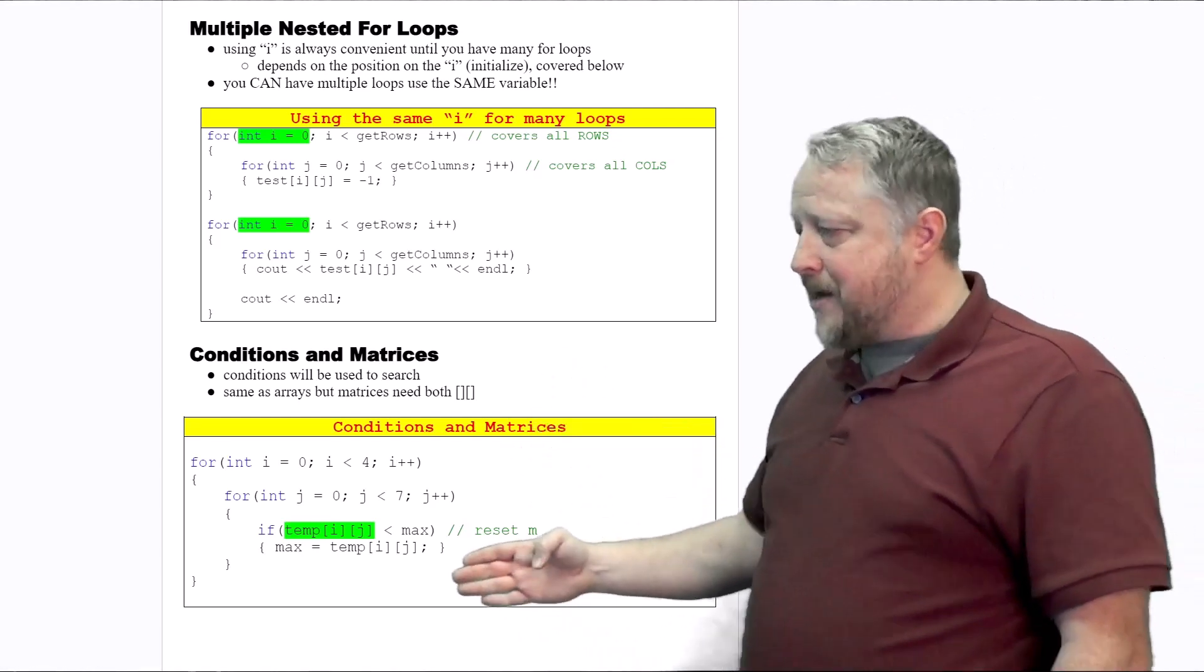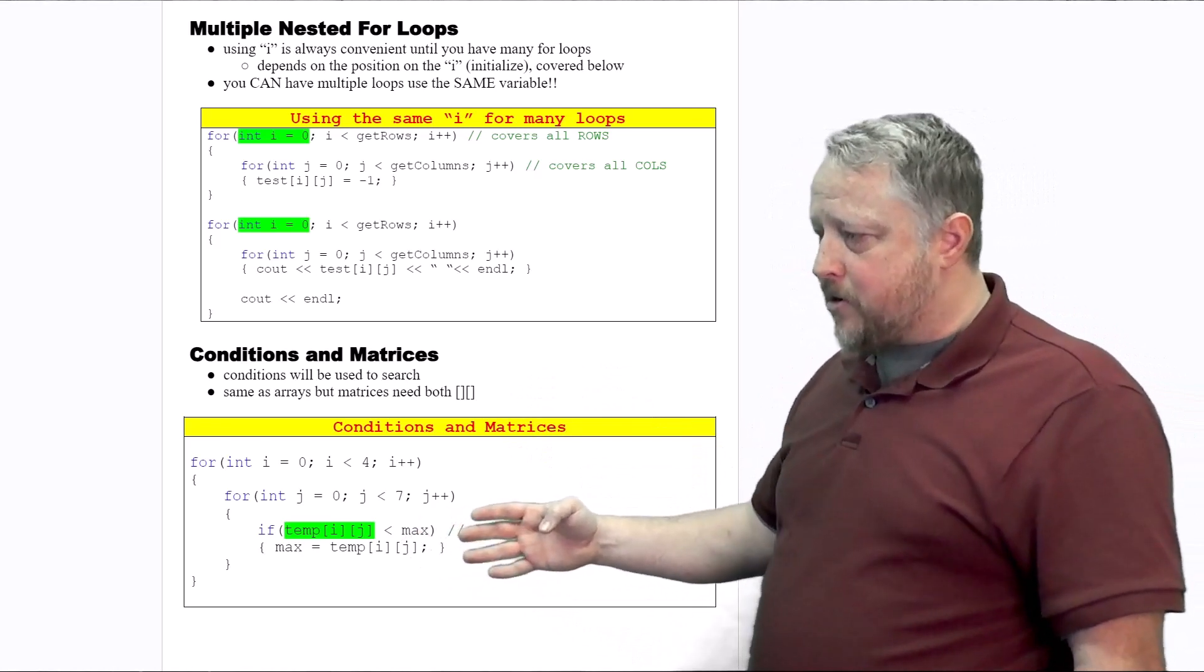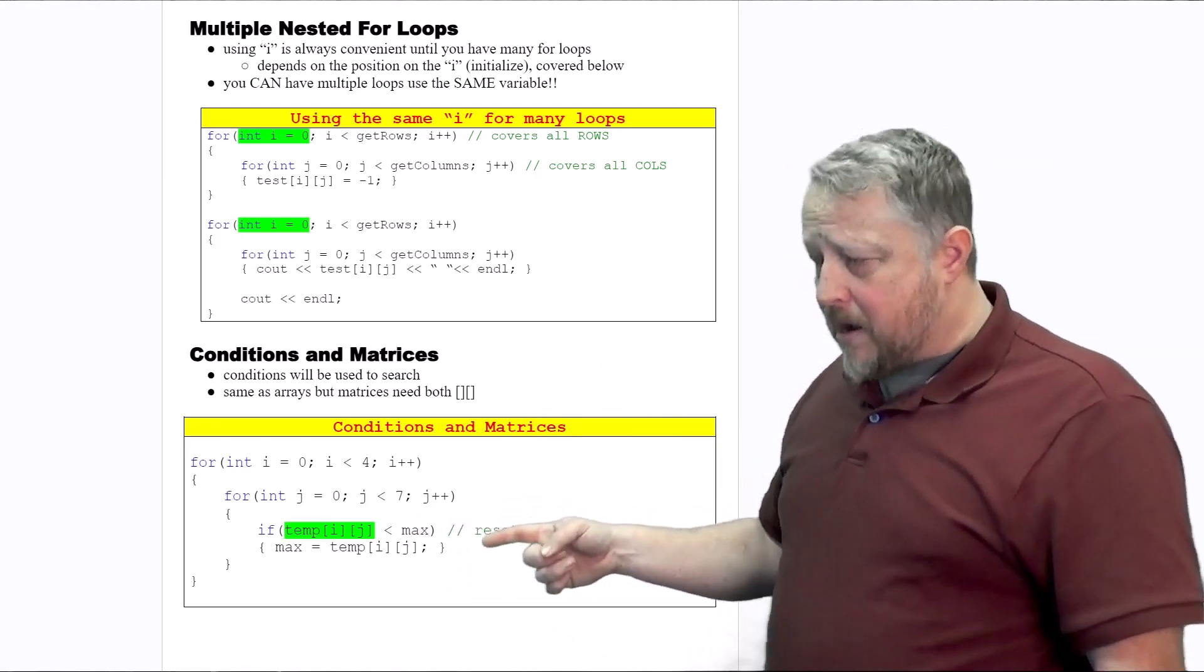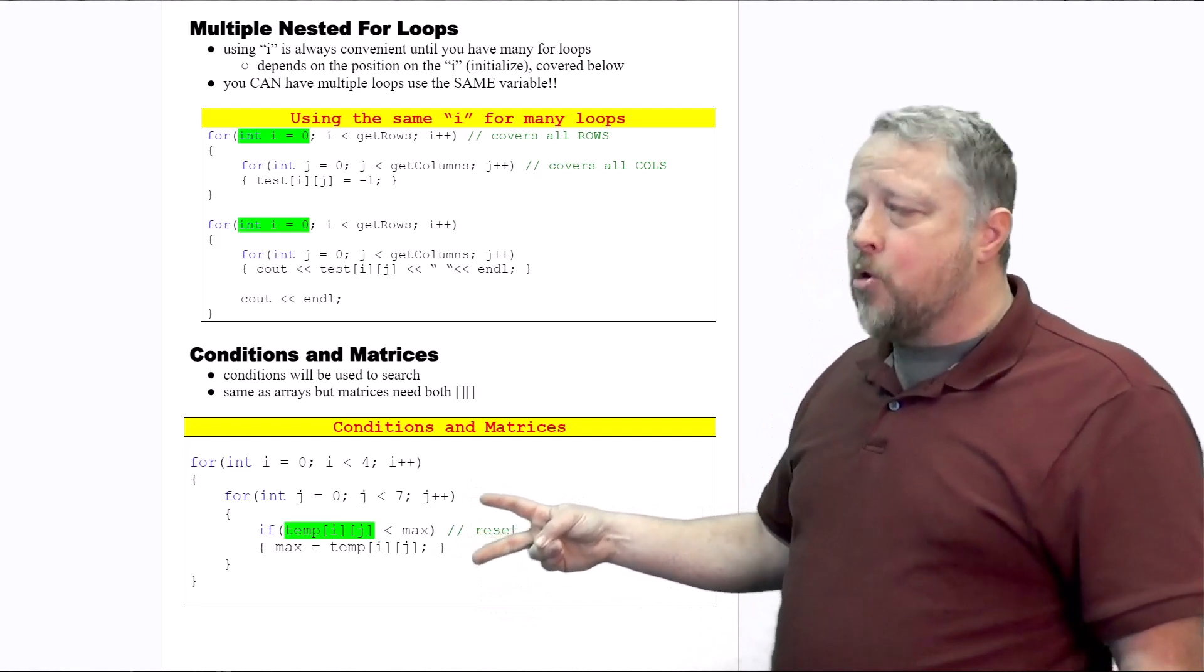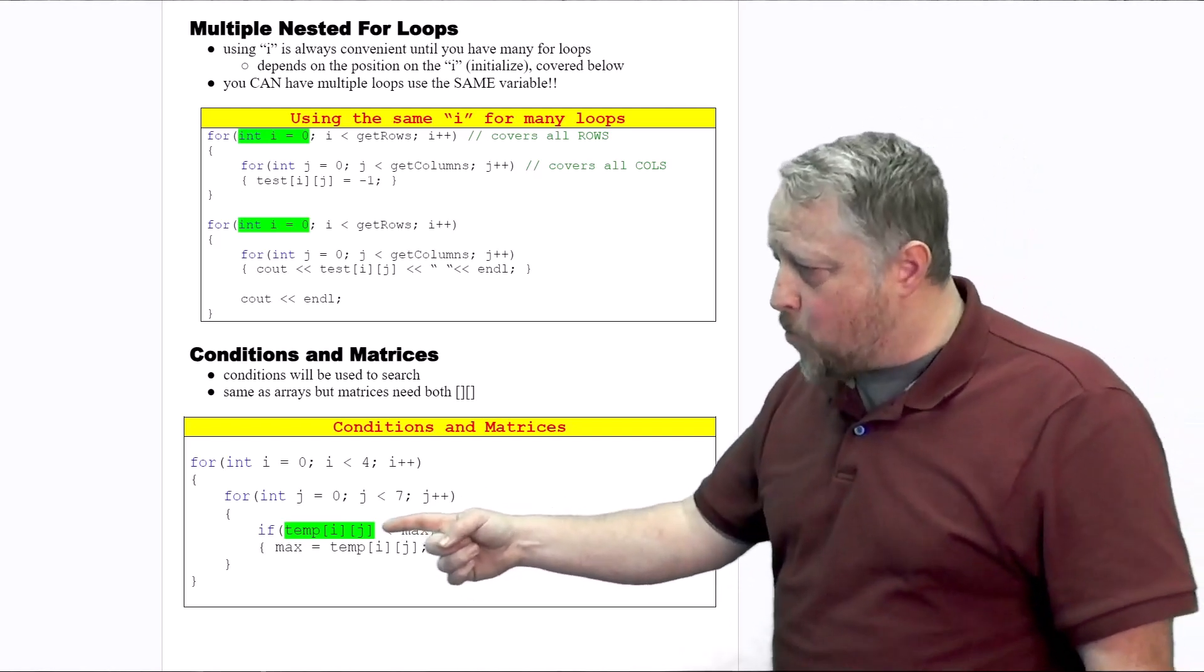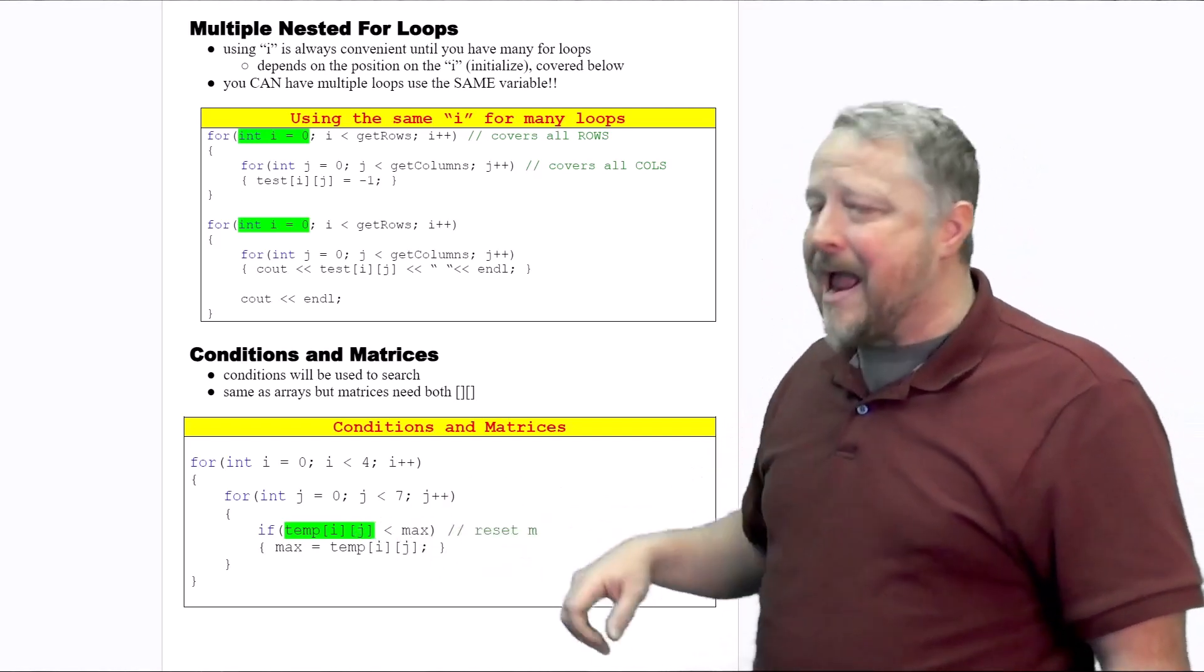Conditions and matrices. Yes, you can go ahead and start using your if statements now. By the way, it would be only in our innermost for loop because that's the one that can give us both I and J.